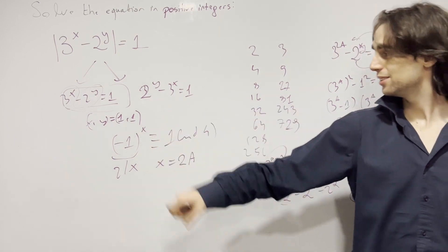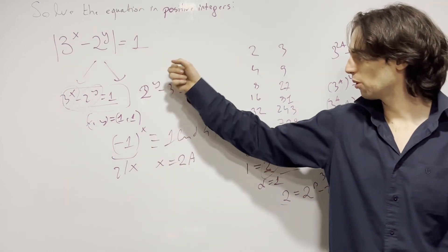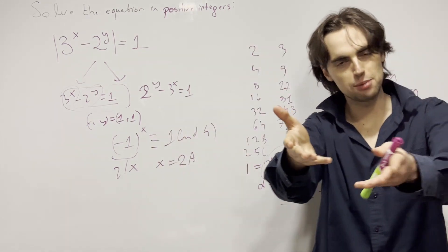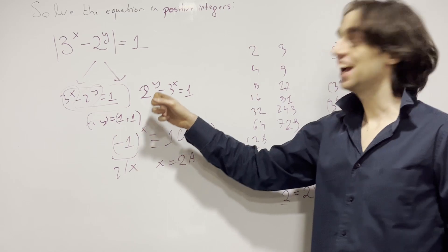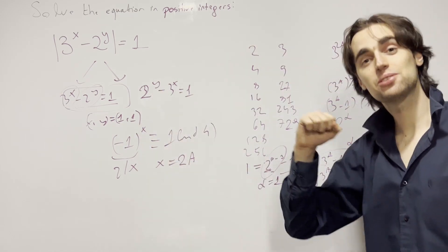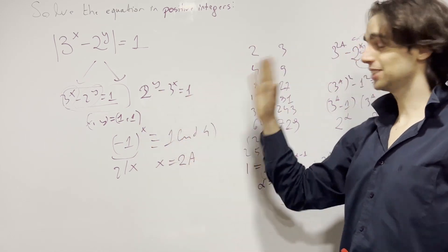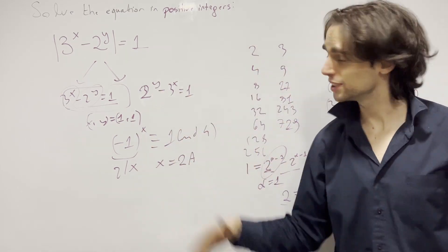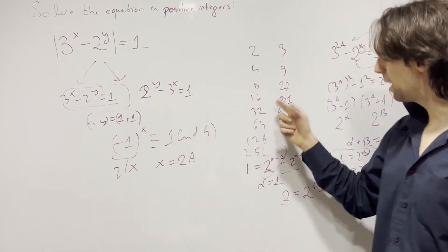Now try this other problem. One solution is 4 minus 3 equals 1 — you're very welcome. I invite you to try to find if there are any other solutions, or if those are the only ones. Prove that.